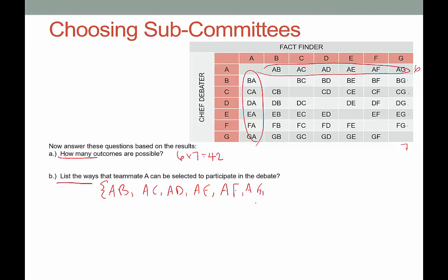Now we need to switch these to indicate that Anna is the fact finder: BA, CA, DA, EA, FA, and last but not least, GA. So there's the complete list.